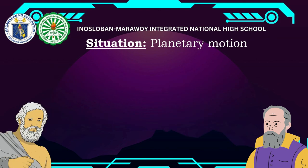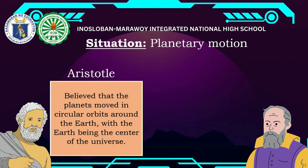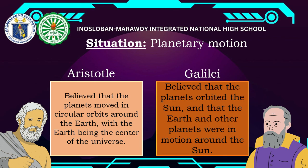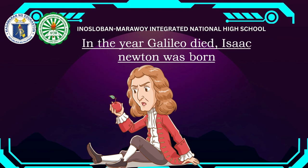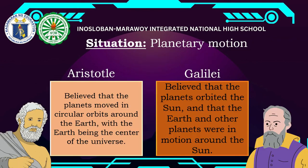Regarding planetary motion: Aristotle believed planets move in circular orbits around the earth, with earth as the center of the universe — geocentric. Galileo believed that planets orbit the sun, and that the earth and other planets are in motion around the sun — heliocentric.